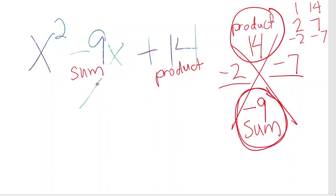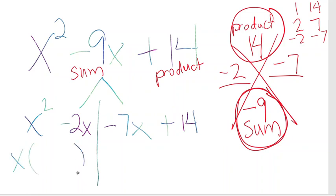So now we know how to separate our middle term, negative 2x, negative 7x. Bring down the first term and the last term. And then factor by grouping. Group the first two terms. They have a greatest common factor of x, and divide that out. x times x minus 2.